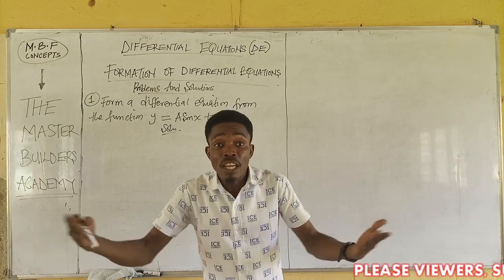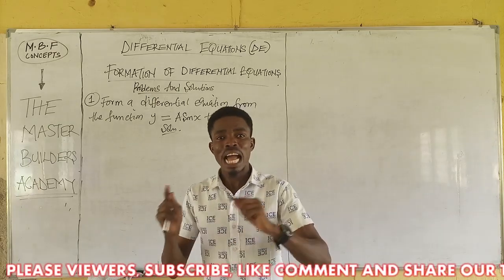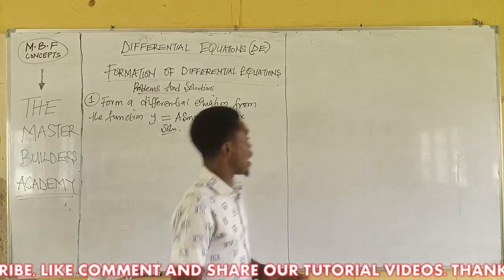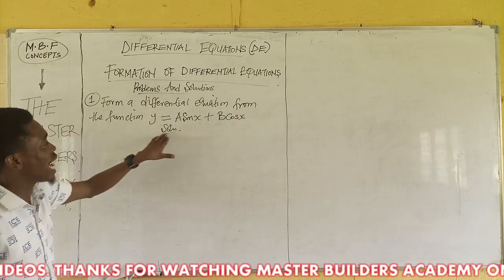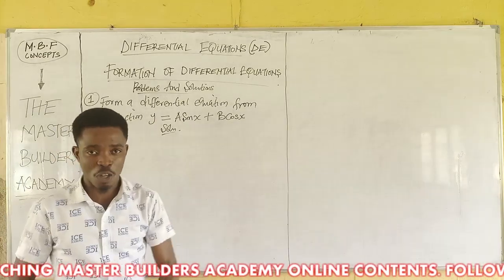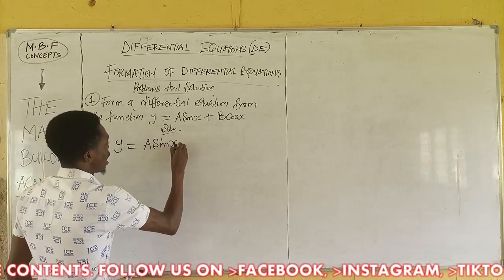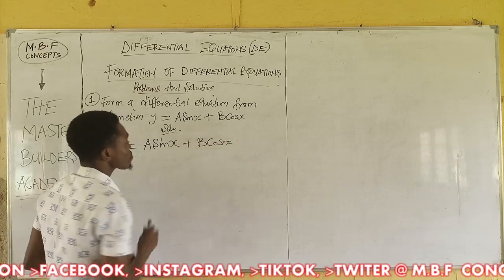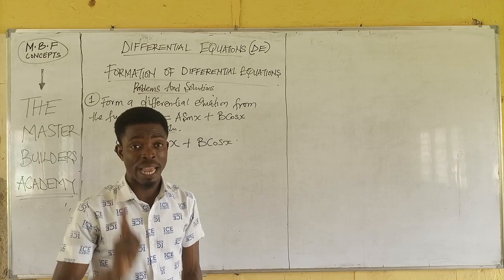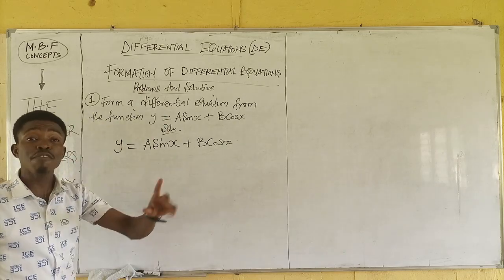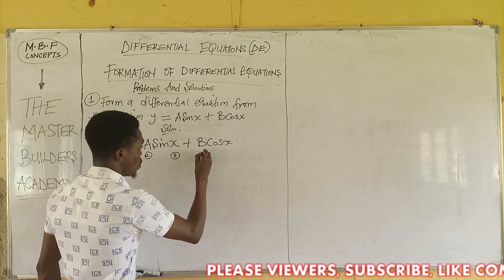What are arbitrary constants? You will get to know when we look at the first problem on the board. The very first question asks us to form a differential equation from the function y = a sin x + b cos x. Now, in this question we have four variables: y, a, x, and b.